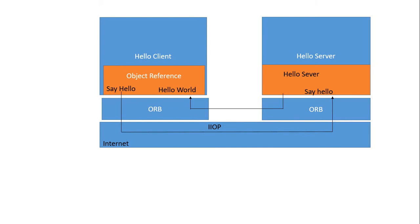This is the architecture of CORBA. This is the client machine and this is the server machine. There is the ORB interface on the client side and the ORB interface for the server machine. The lower layer is the IIOP — Internet Inter-ORB Protocol — which works on TCP/IP protocol for transmission.